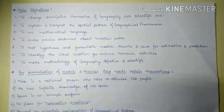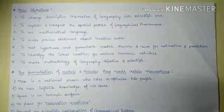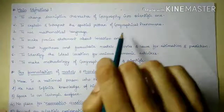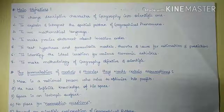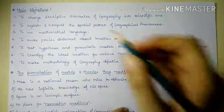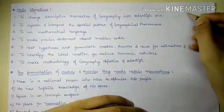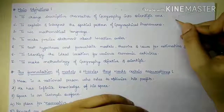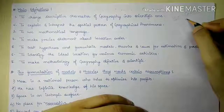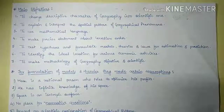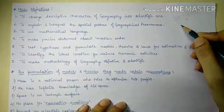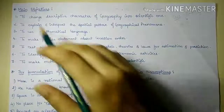Looking at the main objectives of quantitative revolution in geography, the first objective is to change the descriptive character of geography into a scientific one. It tried to change geography — the study of earth — into a discipline that analyzes various parameters of earth using mathematical and quantitative techniques.